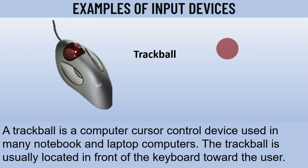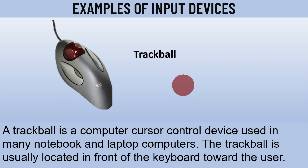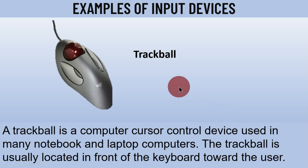We have the trackball, which looks like the mouse and has a ball feature. The trackball is a computer cursor control device used in many notebook and laptop computers. It serves as a mouse and has a rotating feature that helps you move the cursor on the computer screen. The trackball is usually located in front of the keyboard toward the user and helps you rotate or control the cursor on the computer screen. This is an input device found in our computing environment.